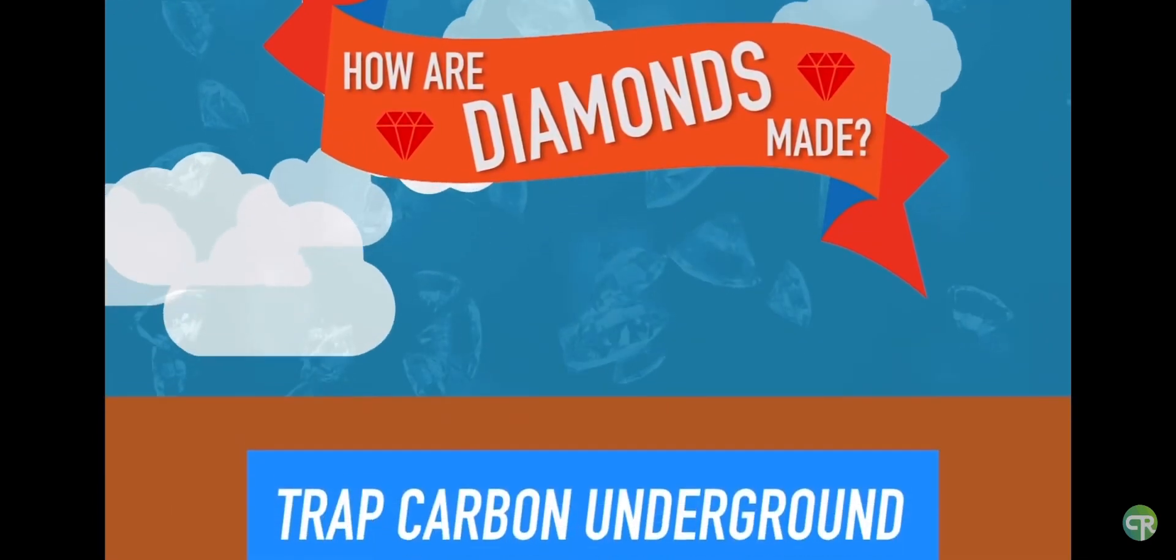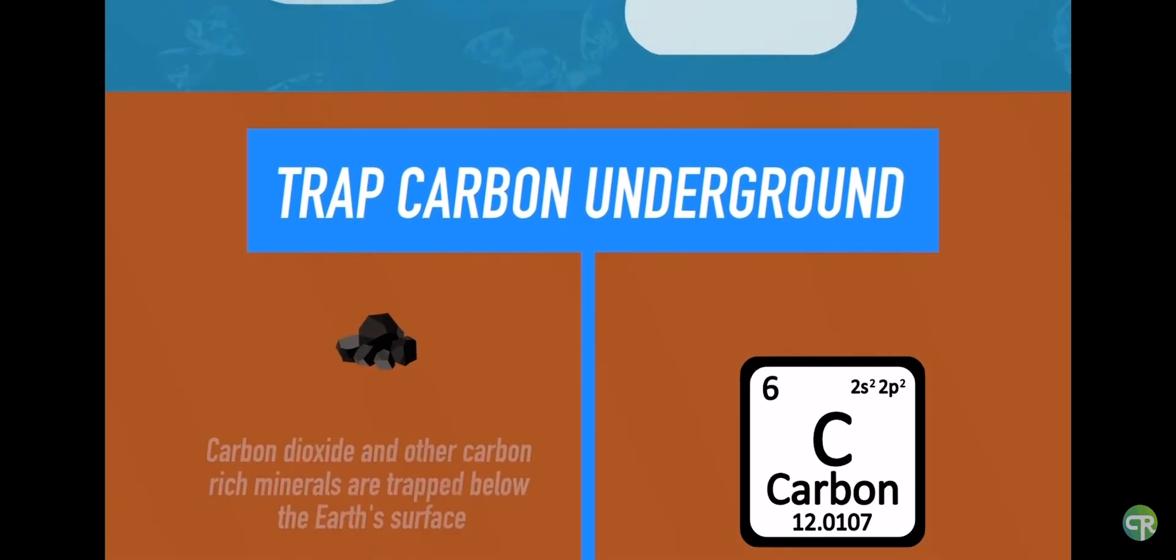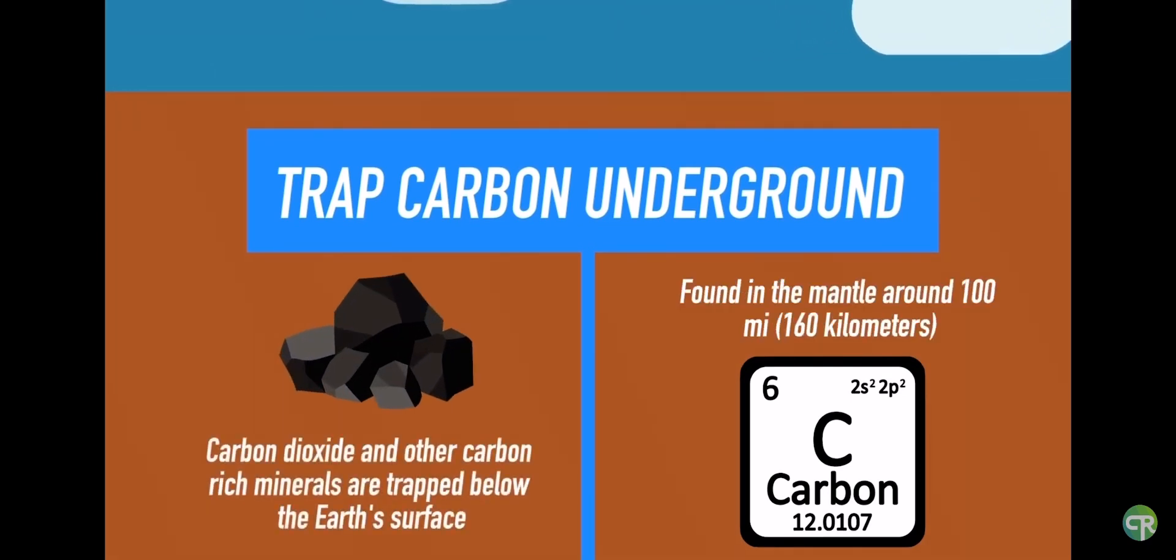The first step to diamond formation is carbon dioxide and other carbon-rich minerals getting trapped below the Earth's surface. This is generally trapped through organic matter that has been buried over the years and is found in the mantle around 100 miles or 160 kilometers underneath the surface of the Earth.